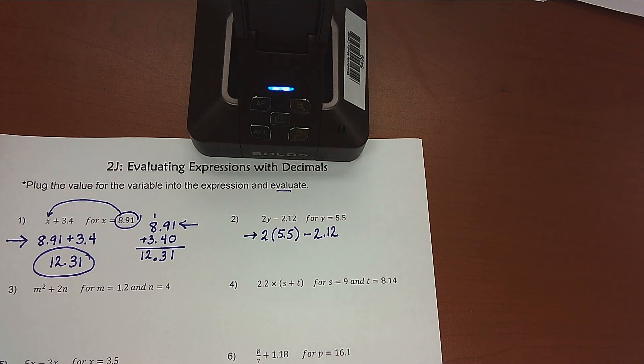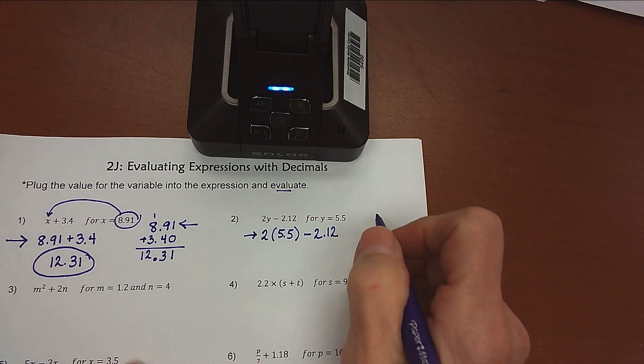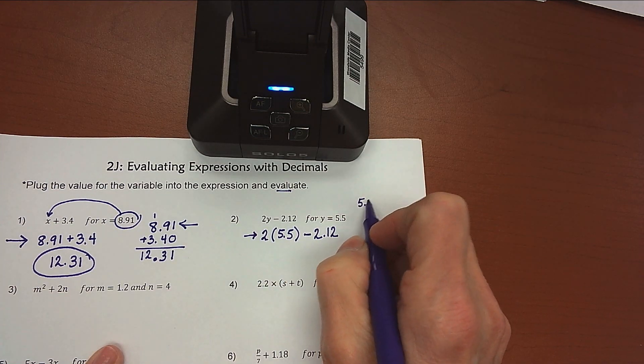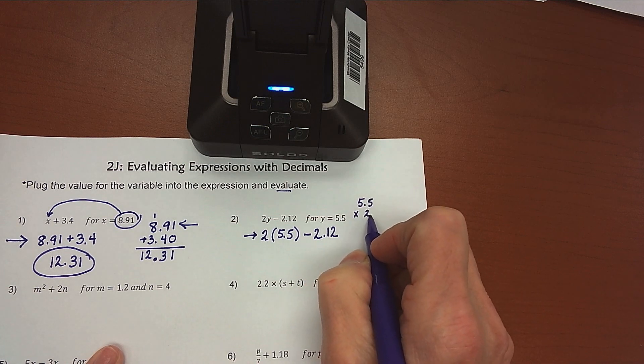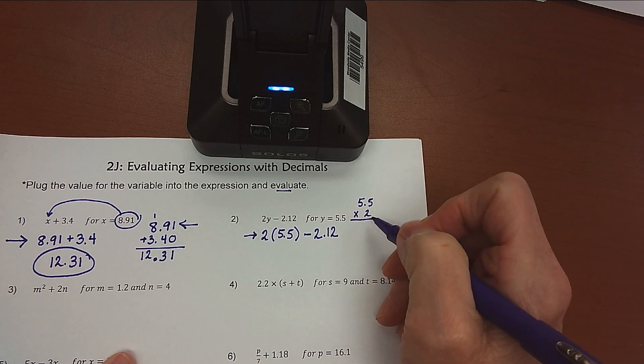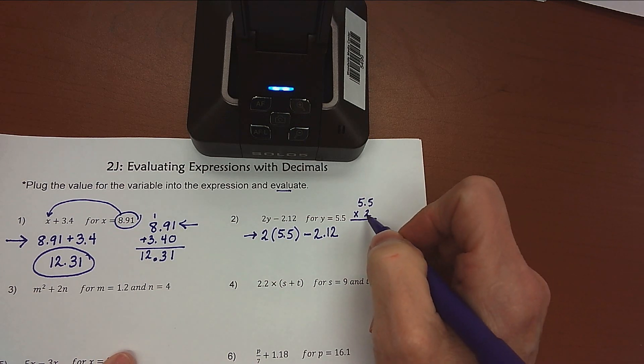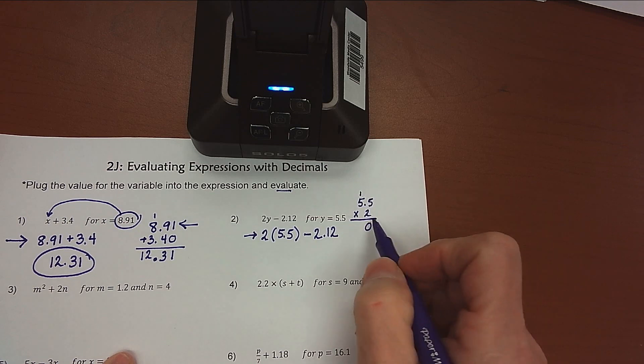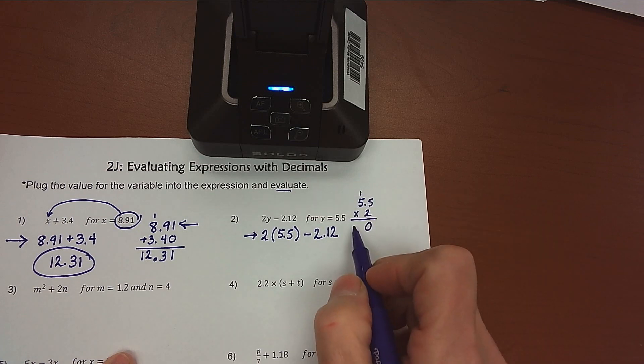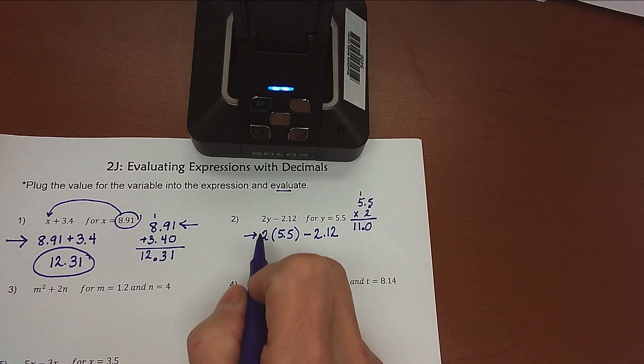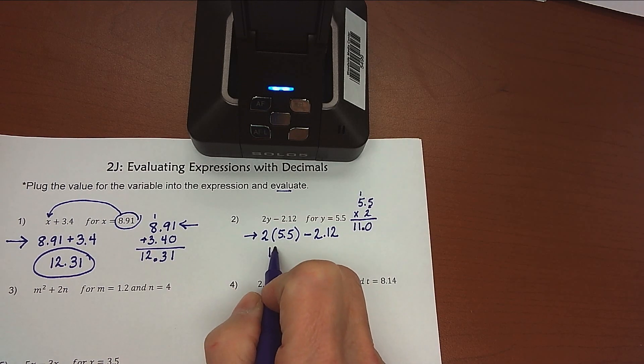I rewrote my problem with the substitution, and now I'm going to work out the problem 5.5 times 2. I always put the longer number on the top. It makes my multiplication easier. I ignore my decimal point until I'm done with the multiplication. So 2 times 5 is 10. Put down my 0, carry my 1. 2 times 5 is still 10, plus 1 is 11. One number behind the decimal point in the problem, one number behind the decimal point in the answer. So 2 times 5.5 is 11.